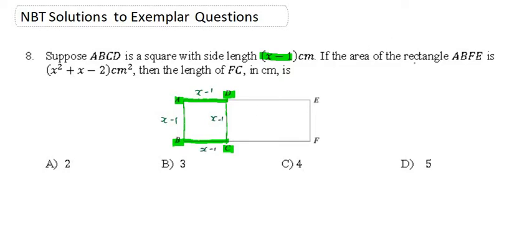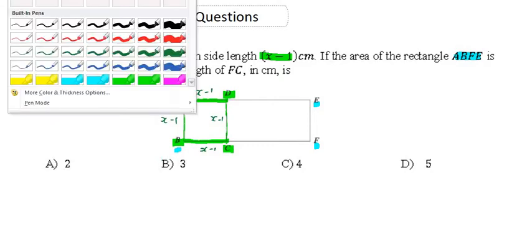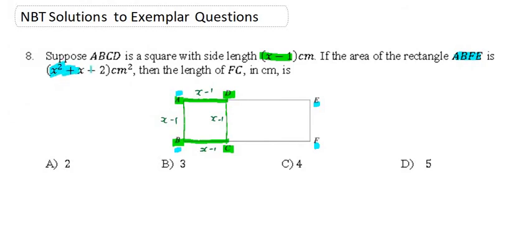And what else do we have? If the area of the rectangle ABFE, so if the area of this rectangle ABFE, that rectangle over there, if it is x squared plus x minus 2, then the length of FC, so FC, will be how much?